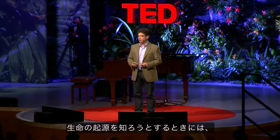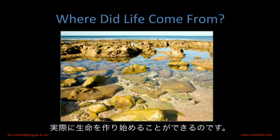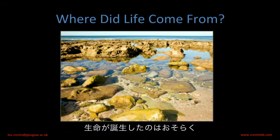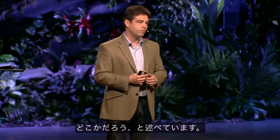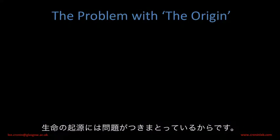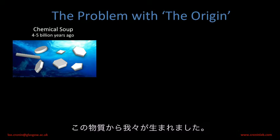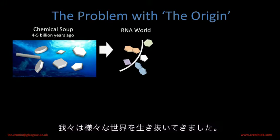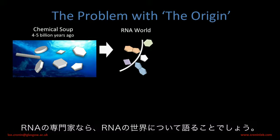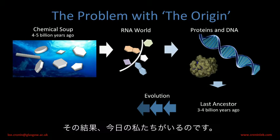We need to understand that if we're going to make artificial life or understand the origin of life, we need to power it somehow. Darwin himself mused in a letter to a colleague that he thought life probably emerged in some warm little pond somewhere — maybe not in Scotland, maybe in Africa, maybe somewhere else. But the real honest answer is we just don't know. Because way back four and a half billion years ago, there was a vast chemical soup of stuff. And from this stuff, we came — through the RNA world, somehow to proteins and DNA, to the last ancestor. Evolution kicked in, and that's the cool bit. And here we are.